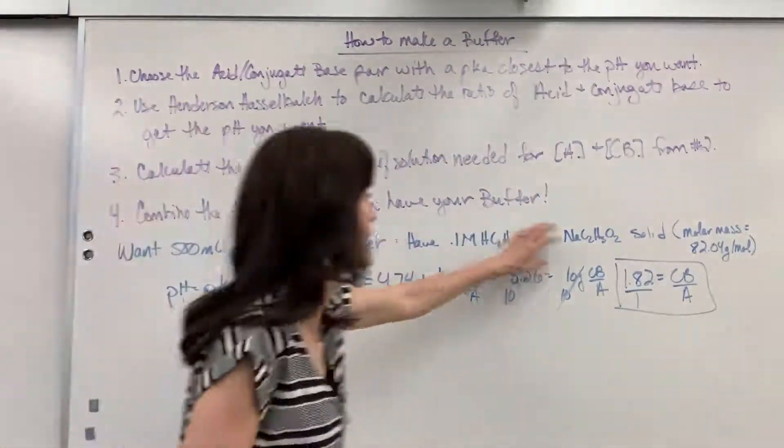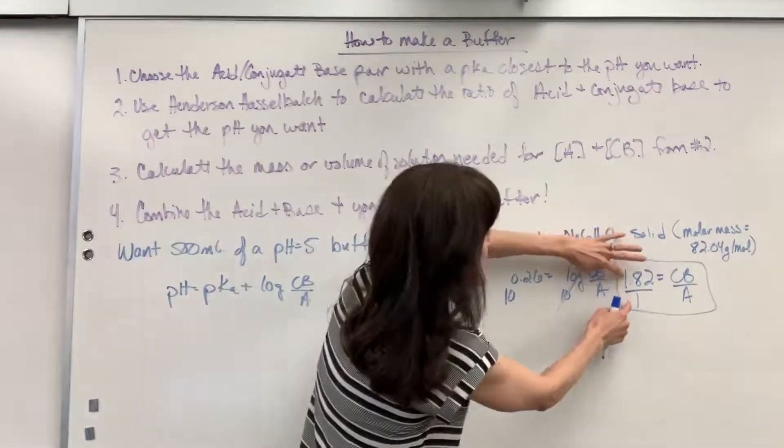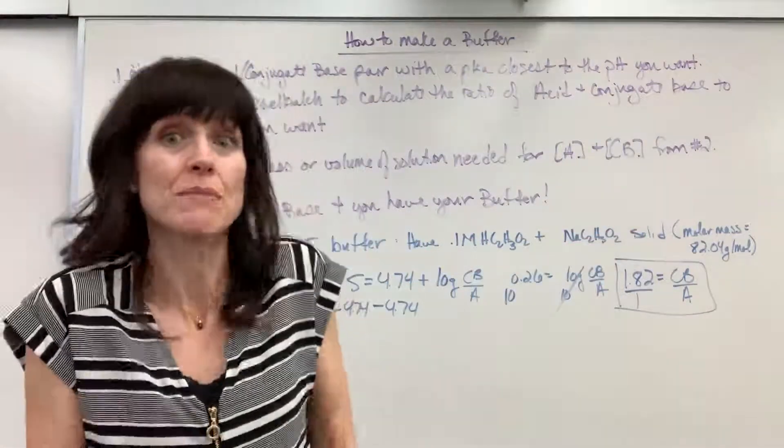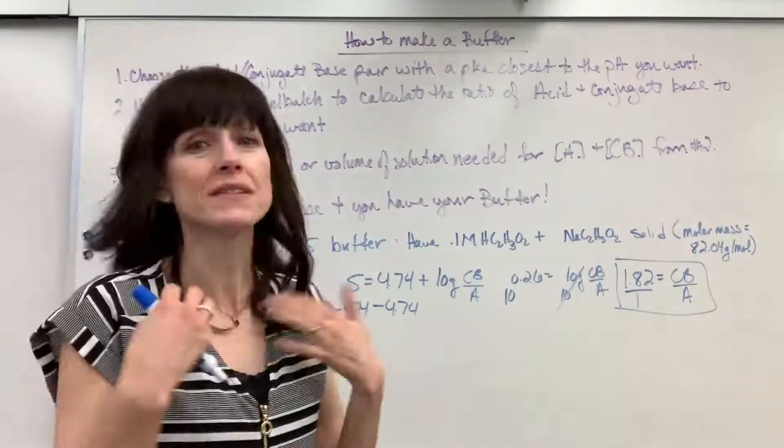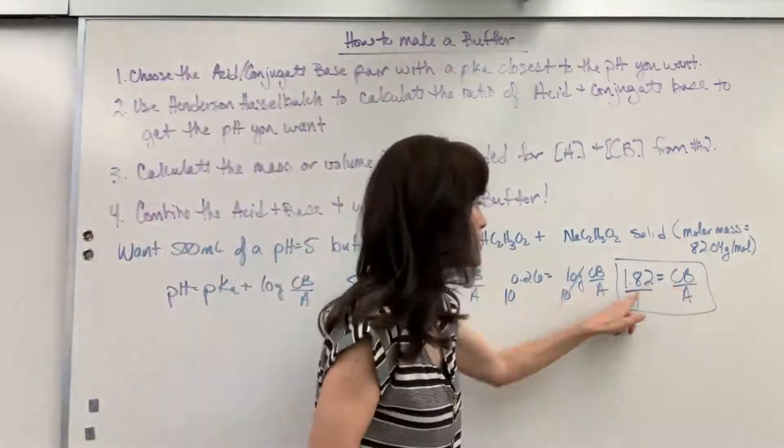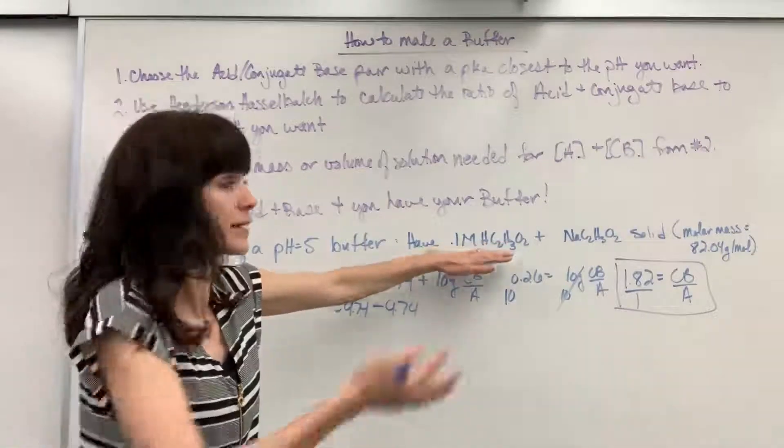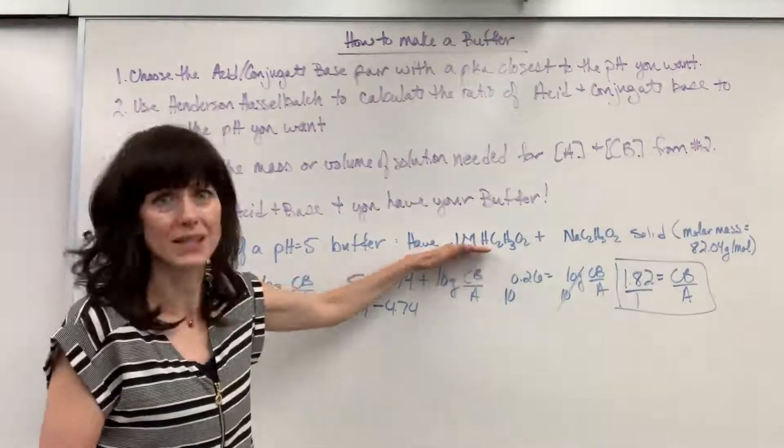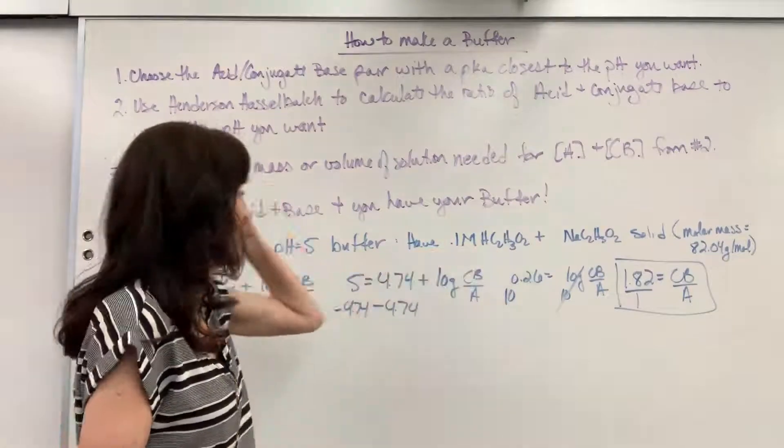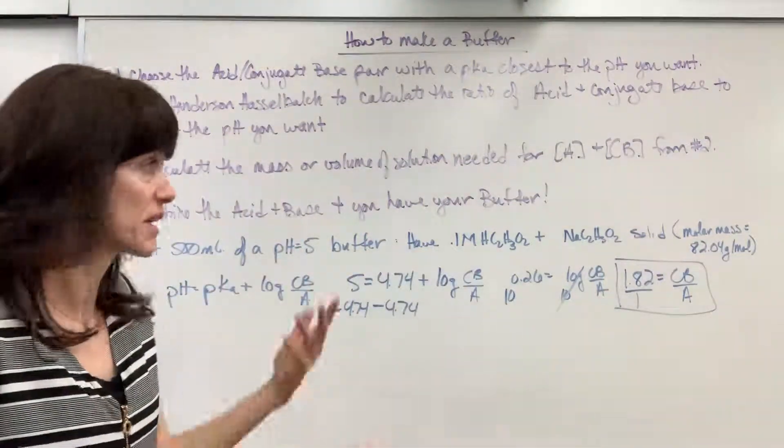Now, step 3, this is where I take what I have, and I get this ratio. This is the physical tactile part of I'm going to make this. So this is what I think is easiest. Take your solution, and that's where you begin. So I said, in my cupboards, I have a ton of acetic acid. So I have this 0.1 molar acetic acid, and I want 500 mils. So I'm like, okay,